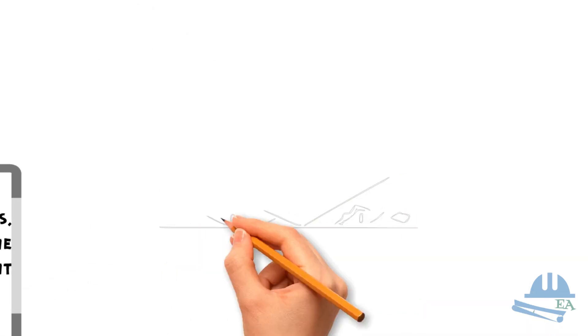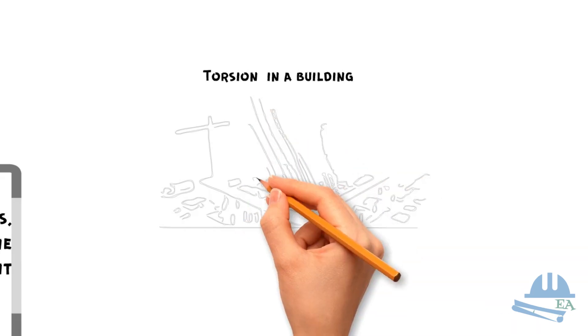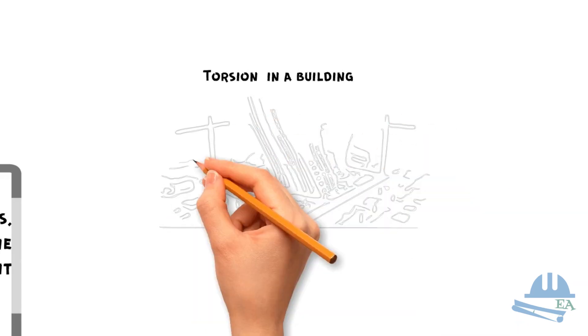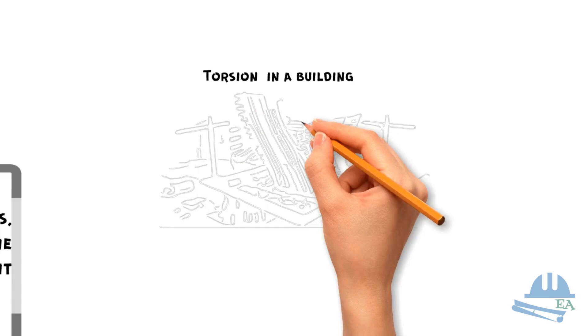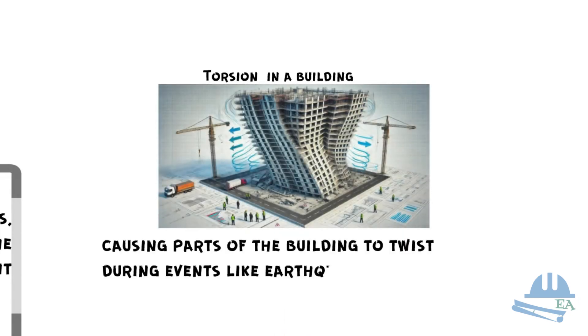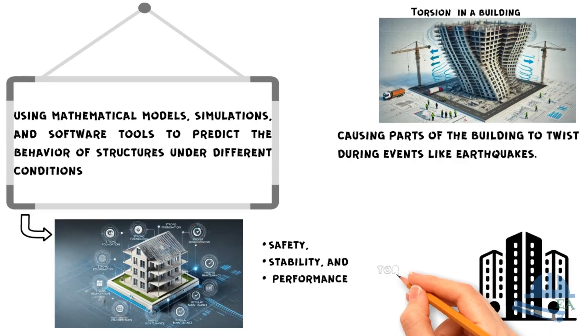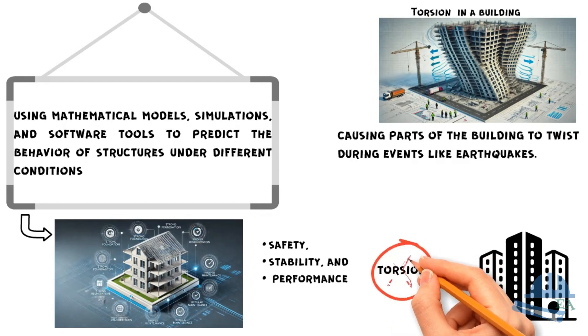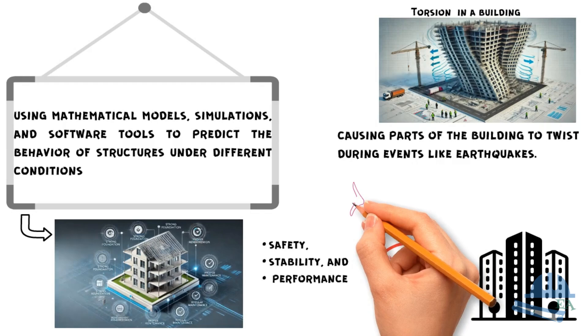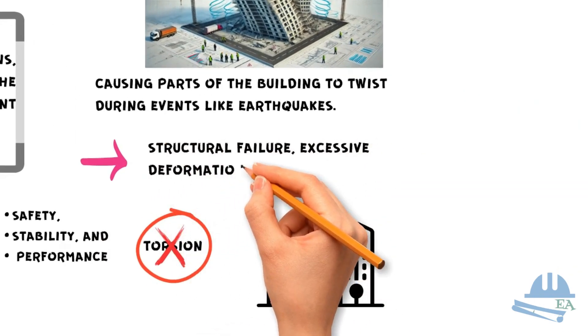Let's consider an example related to torsion in buildings. Torsion occurs when there is an asymmetrical distribution of mass and stiffness, causing parts of the building to twist during events like earthquakes. Suppose you are designing a multi-story building, and during the structural analysis phase, you fail to account for potential torsional effects. This could lead to structural failure, excessive deformations and safety risks.